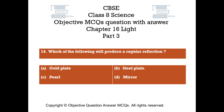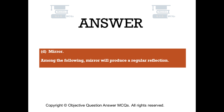Question number 14: Which of the following will produce a regular reflection? Option A: Gold plate, Option B: Steel plate, Option C: Pearl, Option D: Mirror. The right answer is Option D: Mirror. Among the following, mirror will produce a regular reflection.